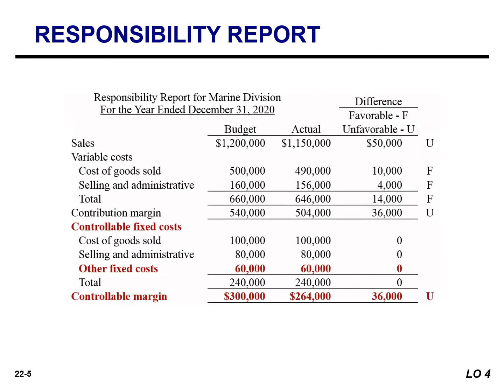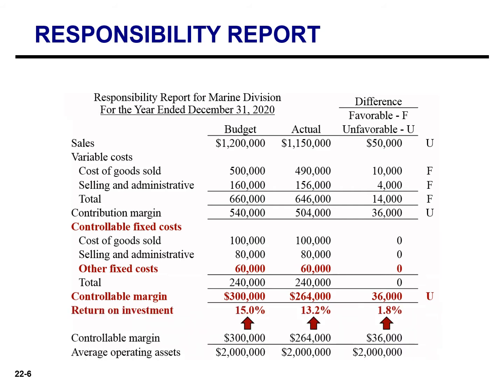This is a responsibility report for the Marine Division. We will now assume that the Marine Division is an investment center. As a result, the manager can control $60,000 of fixed costs that were not controllable when the division was a profit center. The report shows budgeted and actual ROI below controllable margin, and the manager's performance based on ROI was below budget expectations by 1.8% — the difference between the budgeted ROI of 15% and the actual ROI of 13.2%.